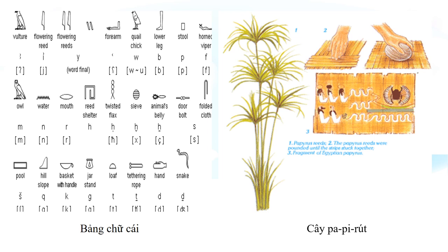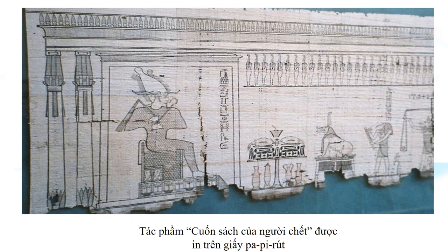Đây chính là hình ảnh một thành phẩm đã được hoàn chỉnh từ cây Papyrus. Cây Papyrus cứng nhưng có thể cuộn tròn lại để người Ai Cập tiện mang đi di chuyển. Các nhà nghiên cứu lịch sử đã tìm thấy giấy Papyrus ở nhiều nơi, nhưng nhiều nhất chính là ở trong các lăng mộ chôn cất những vị Pharaoh - những vị vua của nước Ai Cập cổ đại.